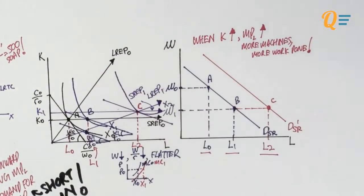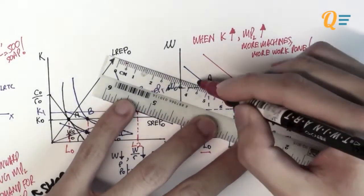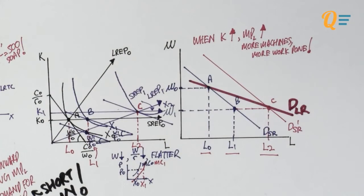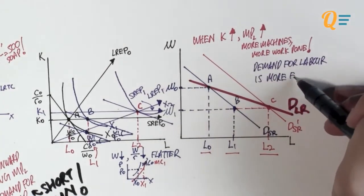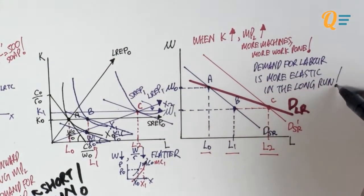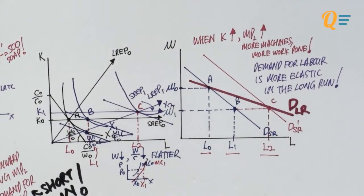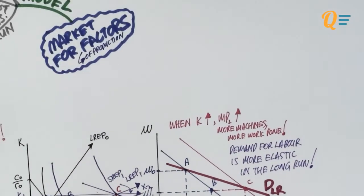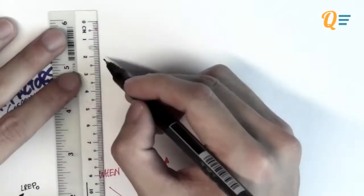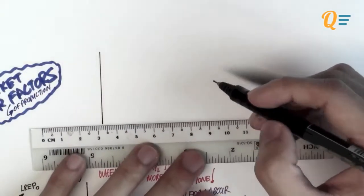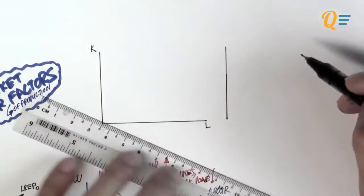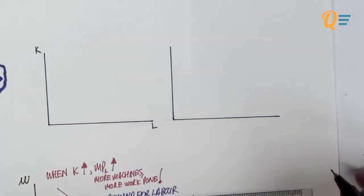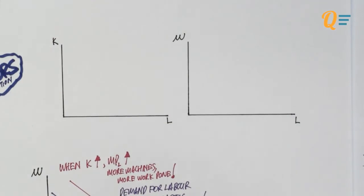To find the long-run demand curve for labour, connect points A and C. The demand curve for labour is seen to be more elastic in the long run than in the short run, because the long-run demand curve is flatter than the short-run demand curve.